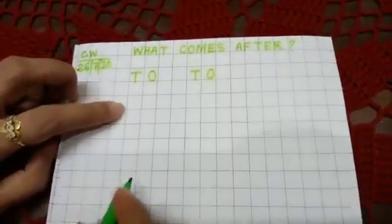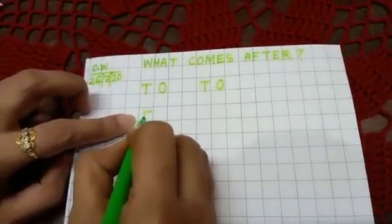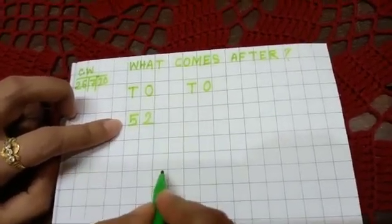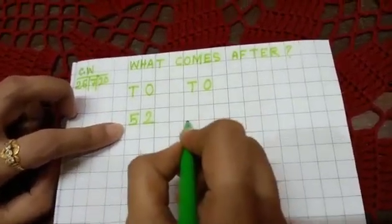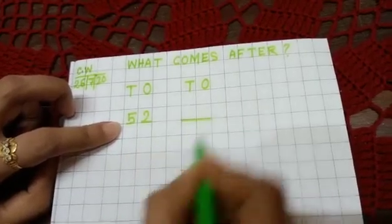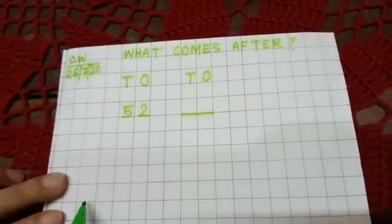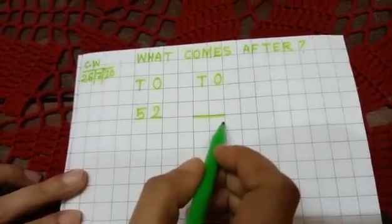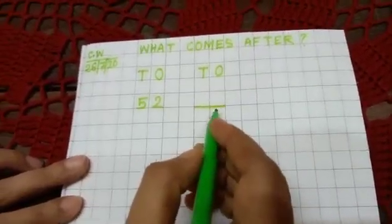Then again here you leave one box and write here five, two—fifty-two. Fifty-two and here you give one dash. So you know fifty-two, next number is? Yes, you will do by yourself.